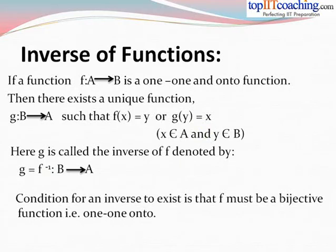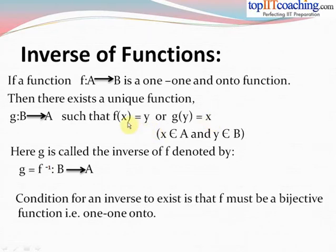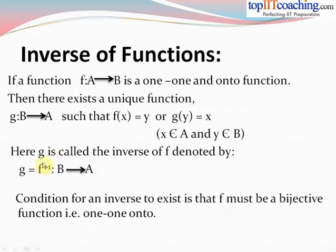Let's start this lecture with the study of inverse of functions. Now what are inverse of functions? If a function f from A to B is a one-one and onto function, then there exists a unique function g from B to A such that f(x) = y, or we can say that g(y) = x — that is, we can express x in terms of y, or as a function of y. Such a function of y is called the inverse of f, denoted by g = f inverse from B to A.